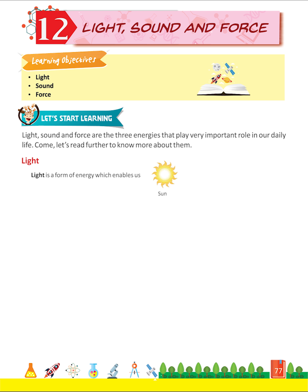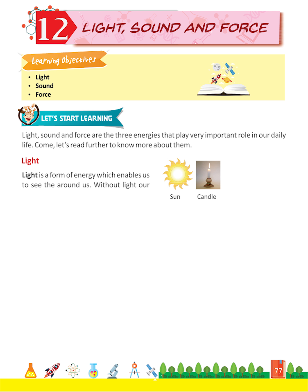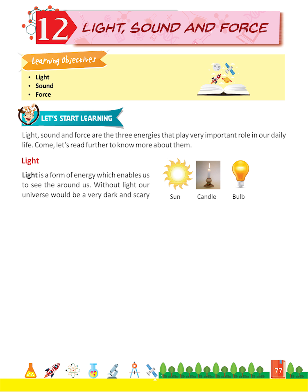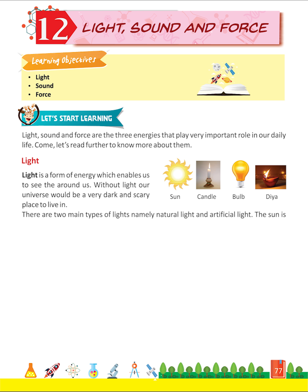Light is a form of energy which enables us to see the world around us. Without light, our universe would be a very dark and scary place to live in. There are two main types of lights, namely natural light and artificial light.